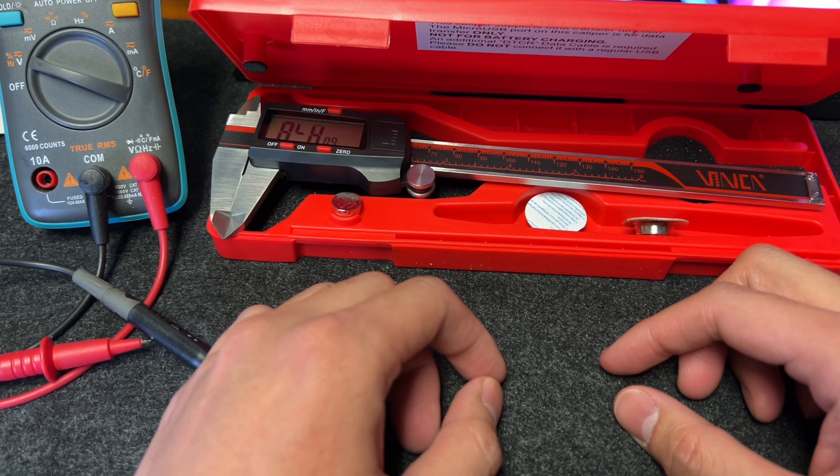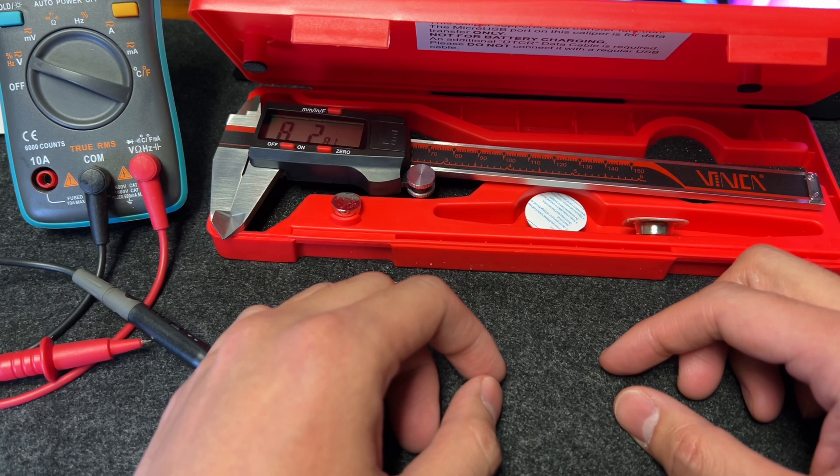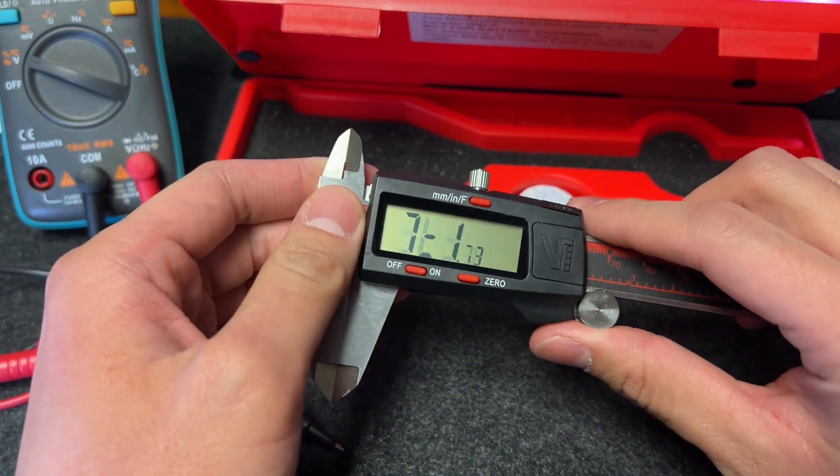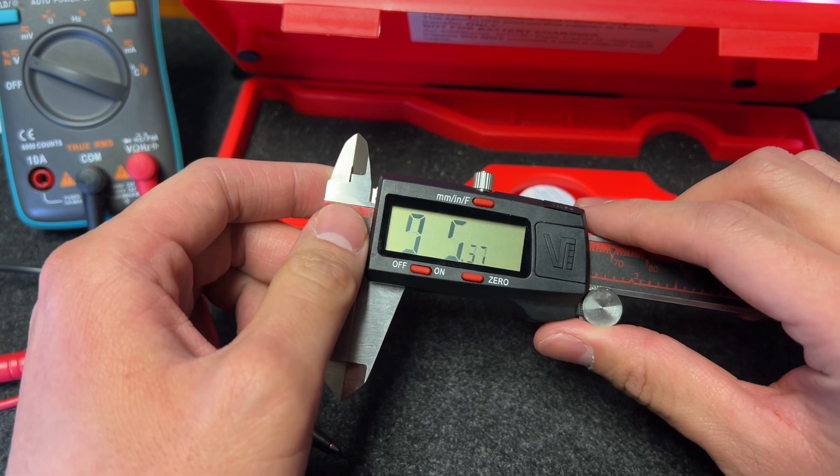Hello, this is Vic from Clockwise Tools. This video is about how to fix a jumping number, blinking number Vinca digital caliper. I have one returned Vinca DCLA-0605 6-inch digital caliper.